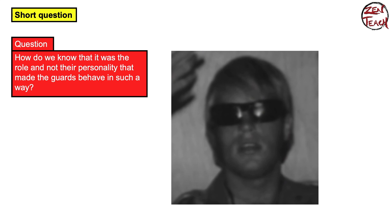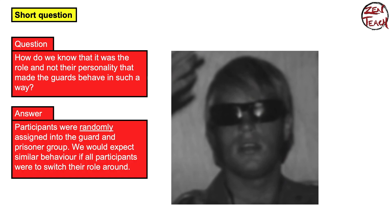You might be asking, how do we really know it was due to the social role? Maybe we just got lucky and picked the ones that would be more aggressive towards prisoners. The thing was that the assignment into the roles — whether a particular participant would be a guard or a prisoner — was done randomly. So the idea is that if we had switched the roles around, we would have expected exactly the same behavioral outcome, because the assignment was random. There is no bias in how we selected these participants into their roles.